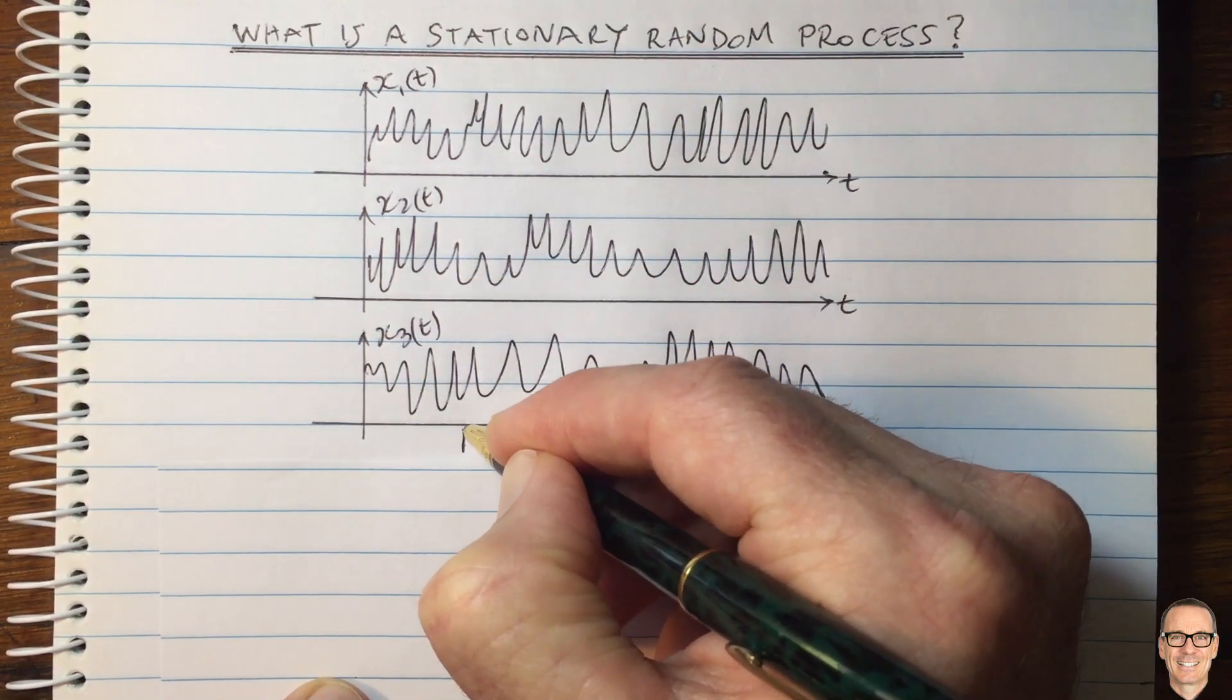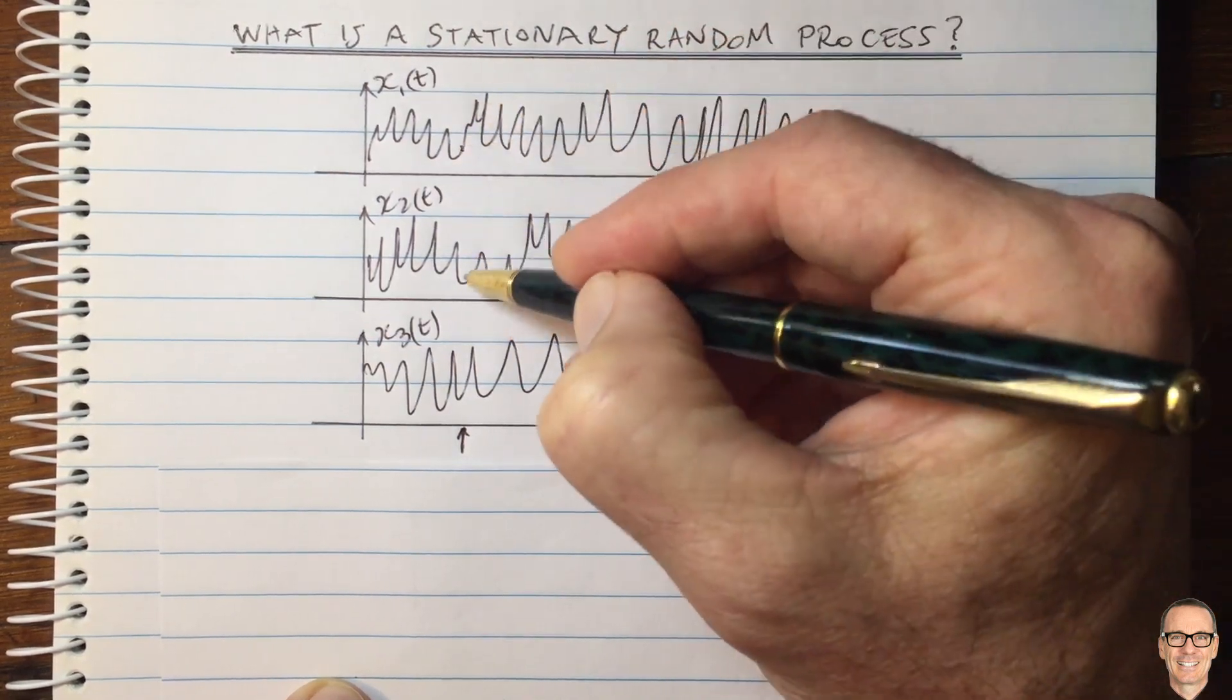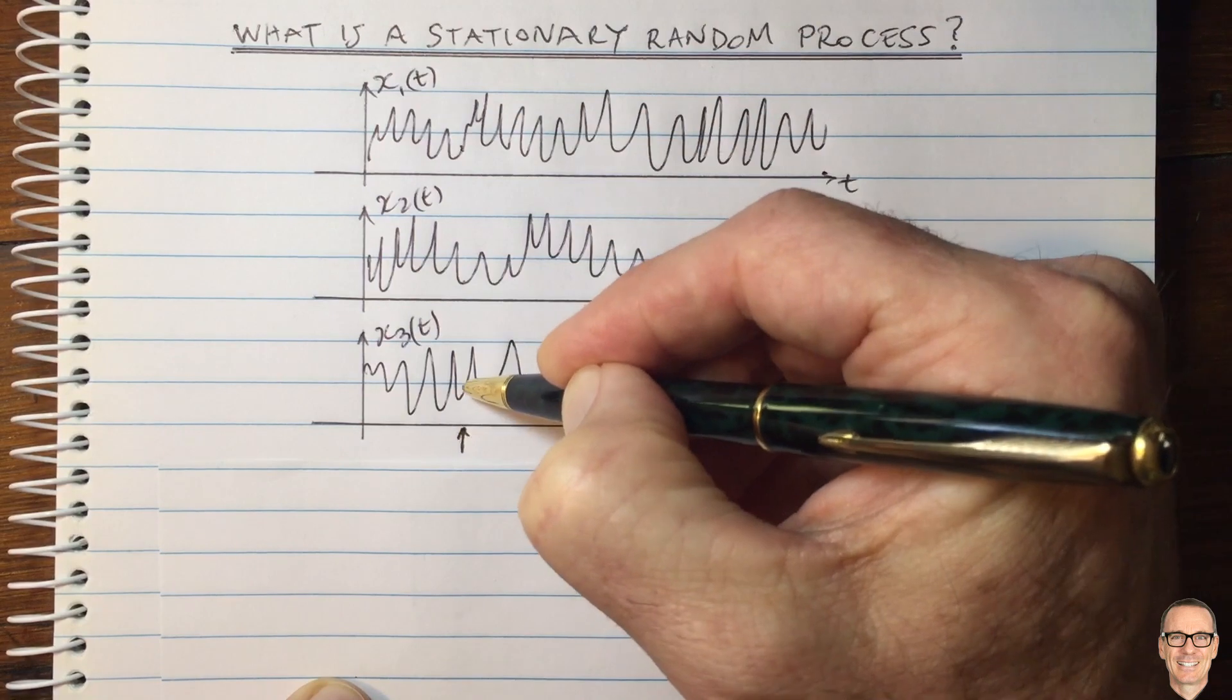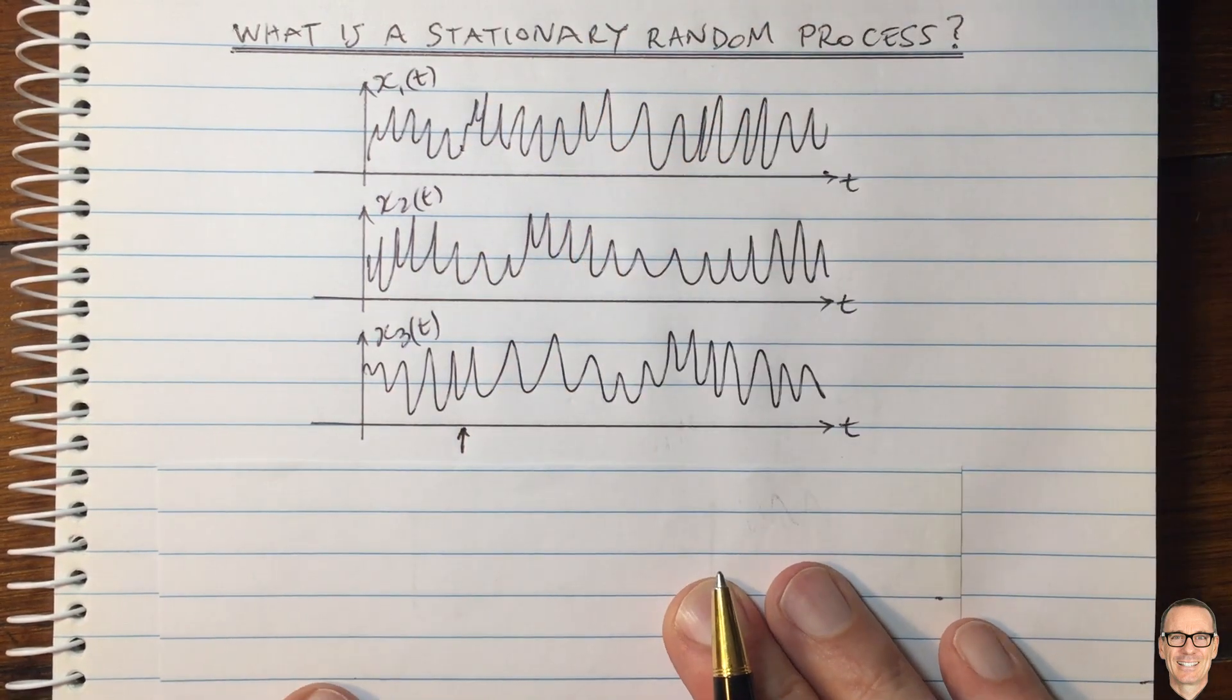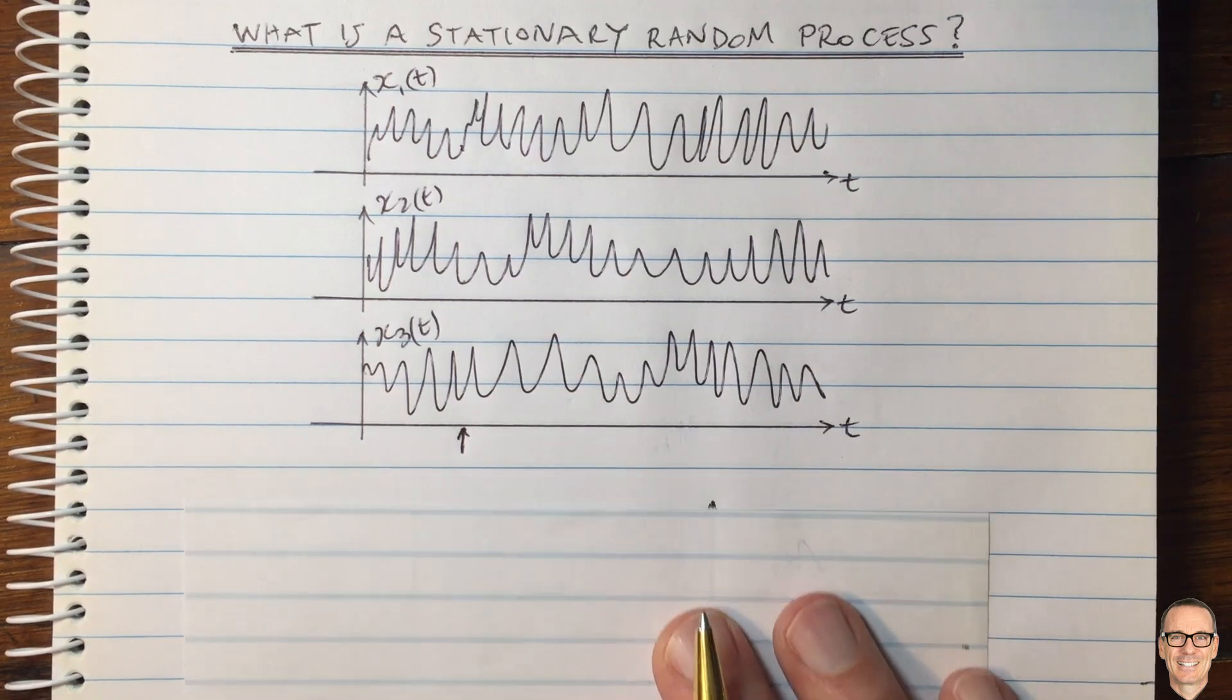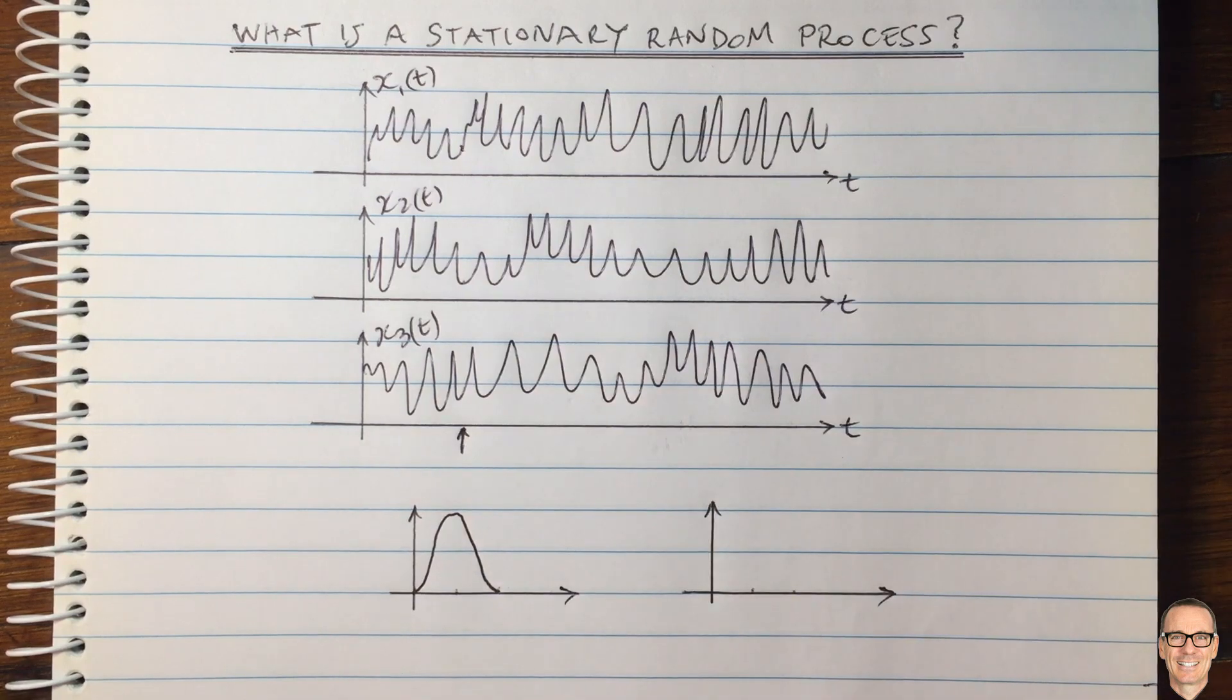So if we picked this time, for example, then the value here would be this value. Here would be a different value. Here would be a different value. They are a random variable. And if we plot the density function of that random variable, perhaps it might look like this.